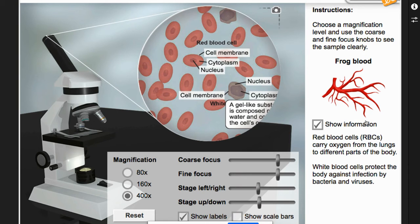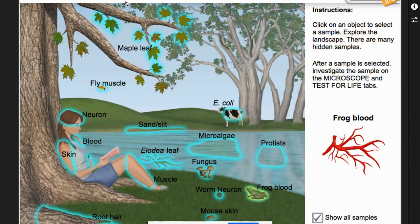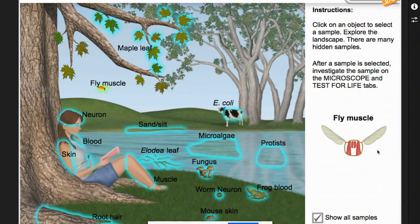Want to do a different one? Go back to Landscape, choose another one. Let's try the Fly Muscle—ew, gross! But then you're going to click on Microscope.